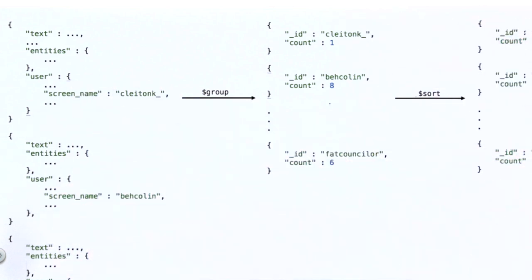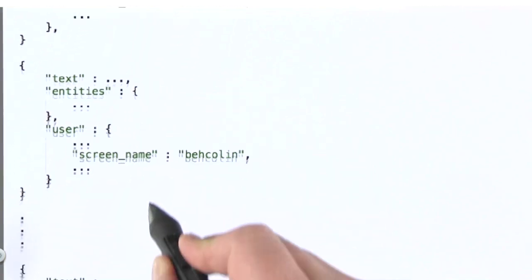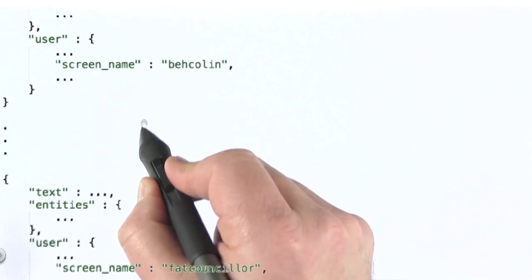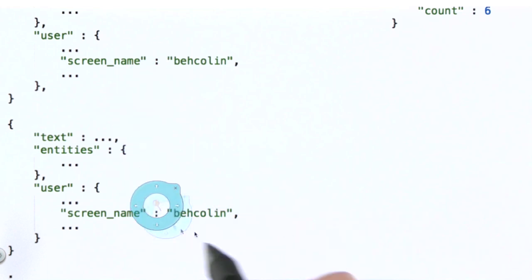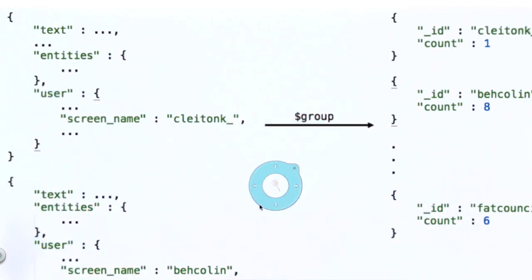Let's take a look at each of these in a little bit more detail. Here's our collection, and you can see that I've represented several documents within the collection, including multiple documents for some of the Twitter users. This collection will be fed into the group stage.